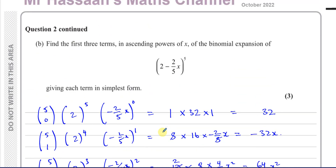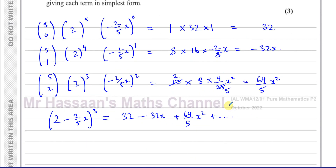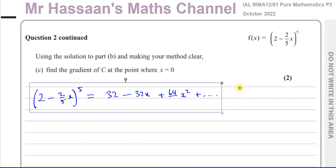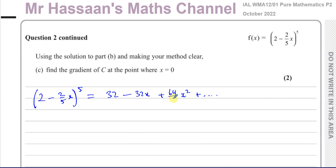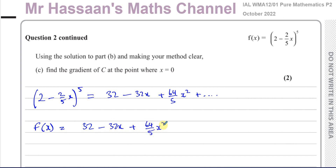So there's the answer to part B. Now we're going to use this answer in part C. For part C, it says: using your solution to part B and making your method clear, find the gradient of C at the point where x equals 0. So f of x, after expanding for the first three terms, is 32 minus 32x plus 64 over 5 x squared.